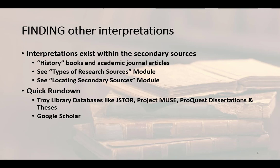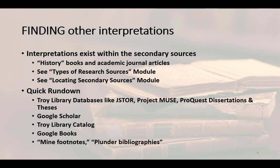Another database to consult for articles is Google Scholar. To get there, navigate to Google Scholar, then type in your keyword search and check out what the system offers. When you're ready to look for books, check out the Troy Library Catalog first, then cruise through the various e-book databases if needed. Google Books is also available, and many times Google Books — even if it doesn't provide an entire book — will provide a book's introduction, which might be all you need. Finally, when you find a work that suits you, mine its footnotes for sources or plunder its bibliography, then track down those sources and see if you can use them.